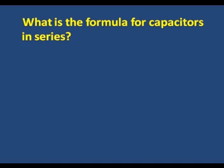What is the formula for capacitors in series? Now remember, this is the opposite for resistors. So it's 1 over the total capacitance is equal to 1 over C1 plus 1 over C2 plus 1 over C3, etc.